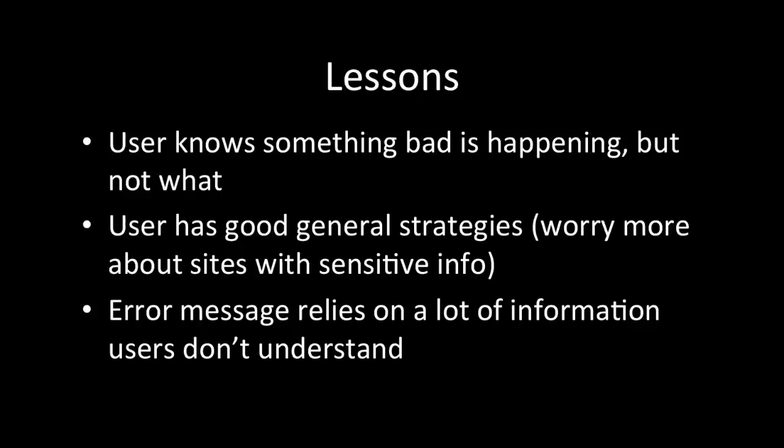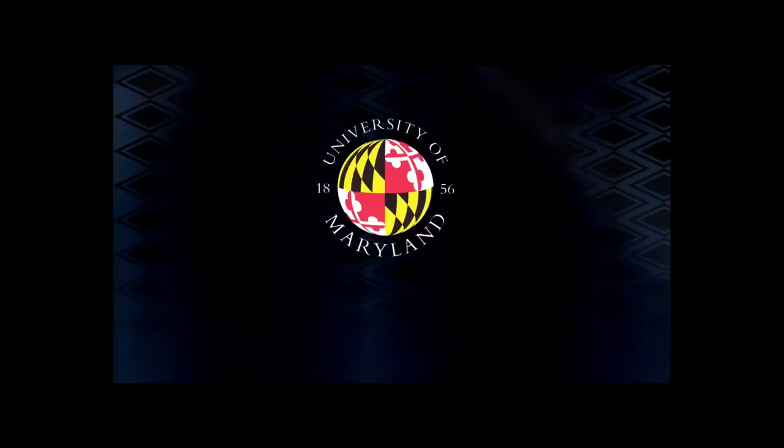Though Firefox does a very good job of discouraging people from continuing on when they encounter this error message, they're not doing a very good job of explaining what could be happening. A question for discussion: how could we improve this? If we wanted an error message that appears when there's an invalid security certificate, what could we do to make it so an average user could understand what's going on and make good decisions? It's not a bad idea to discourage them from taking risky action, but it's even better if we can educate them on what's happening.